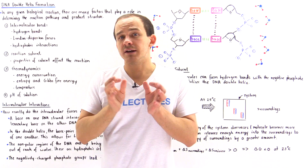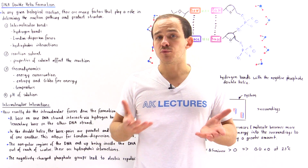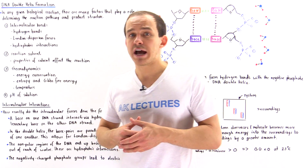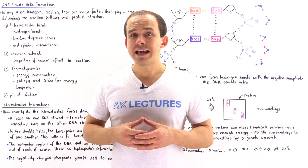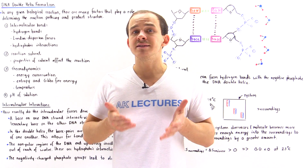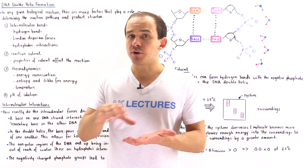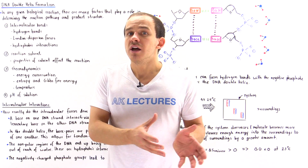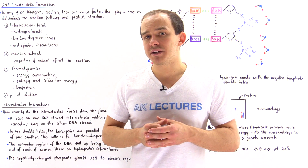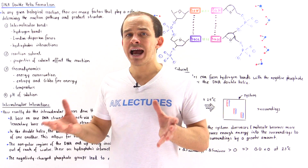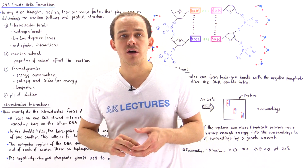We also discussed how the solvent in which the reaction takes place can influence the pathway of that reaction and the final structure of that molecule. For example, the majority of the reactions that take place in nature and specifically in our body take place in water. So water is the universal natural solvent and the properties of water can influence the reaction pathway. We also spoke about thermodynamics and how in any reaction we always have to remember that the reaction has to obey the laws of thermodynamics.